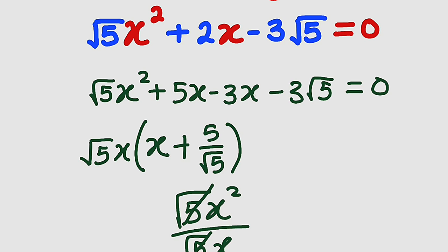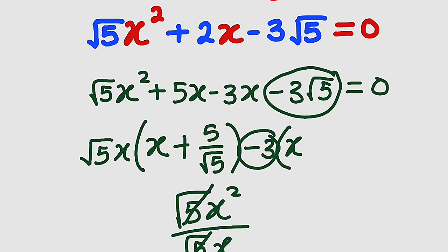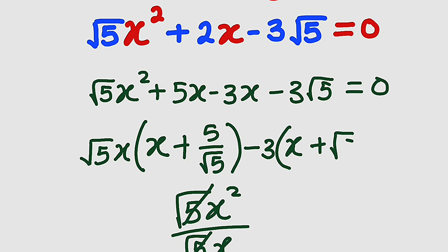Then we move to the second two terms. We have negative 3 in common, so negative 3 is factored outside. Inside, if you take negative 3x and divide by negative 3, you obtain positive x, because negative 3 will cancel negative 3. Then you take negative 3 root 5 and divide by negative 3 — the negative 3 will cancel, leaving positive root 5. So we have positive root 5.